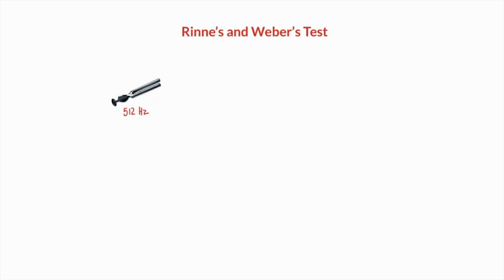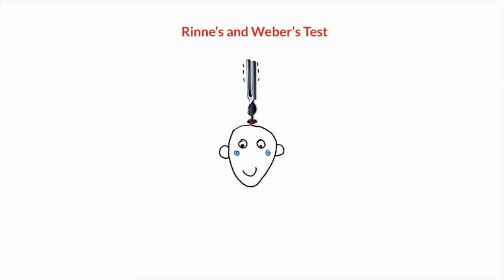Let's start with Weber's test. Weber's test involves the placement of a vibrating tuning fork on the top of the patient's head, or on the forehead, so long as it's in the midline. As I demonstrate on this diagram, the vibrating tuning fork is placed onto the top of the skull in the midline, pressing firmly, and the vibration will be carried through the bone towards the inner ear.